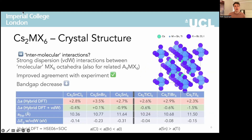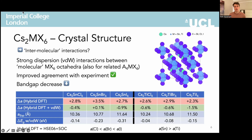Our calculations reveal significant dispersion or van der Waals binding between the octahedra in this molecular crystal structure, and we've also found this to be the case for related zero-dimensional material families such as the A4MX6 compounds, which are receiving a lot of attention as emerging white light emitters. These attractive interactions significantly reduce the calculated lattice constants, reducing the DFT structural prediction errors from around 3% in the literature to less than 1% in most cases.